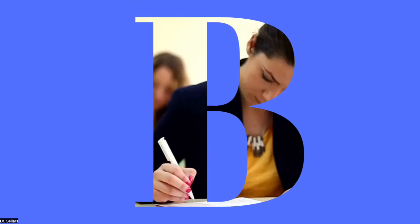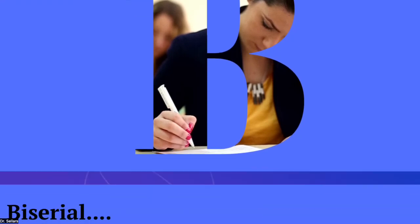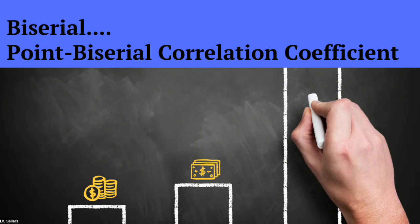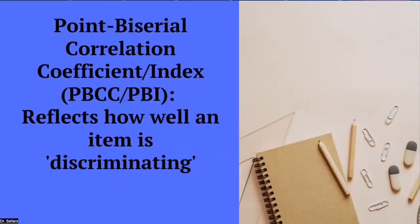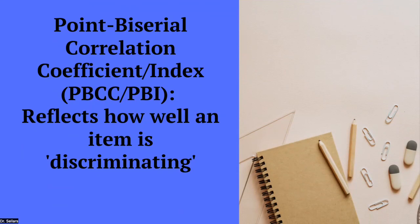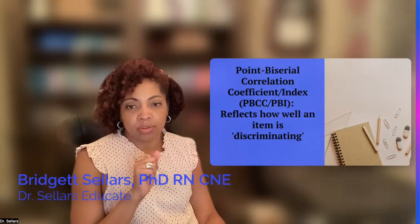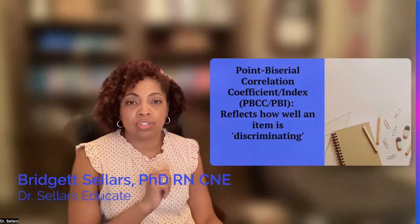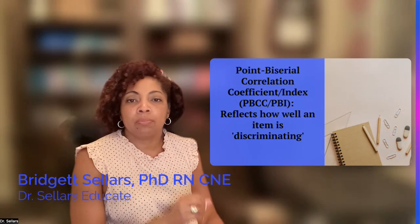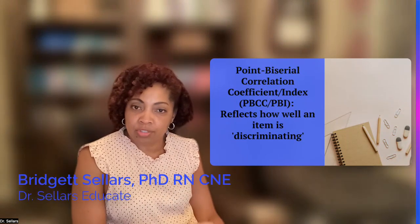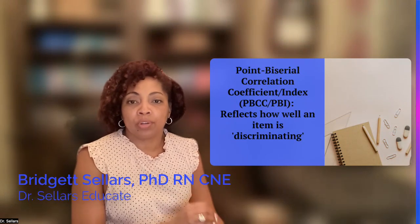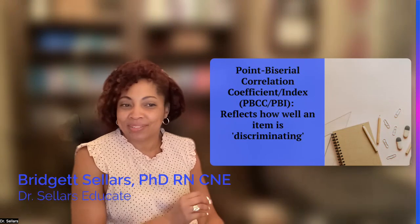B is our focus for this snapshot. Last week was A for analysis, and this week is B — specifically looking at point biserial. Point biserial correlation coefficient is our focus. The definition is that it allows us to identify how well an item is discriminating between high-performing students and low-performing students — which students are knowledgeable about the content asked on the exam question, and which are not. You may see the term point biserial index used interchangeably with point biserial correlation coefficient — it is the same term.